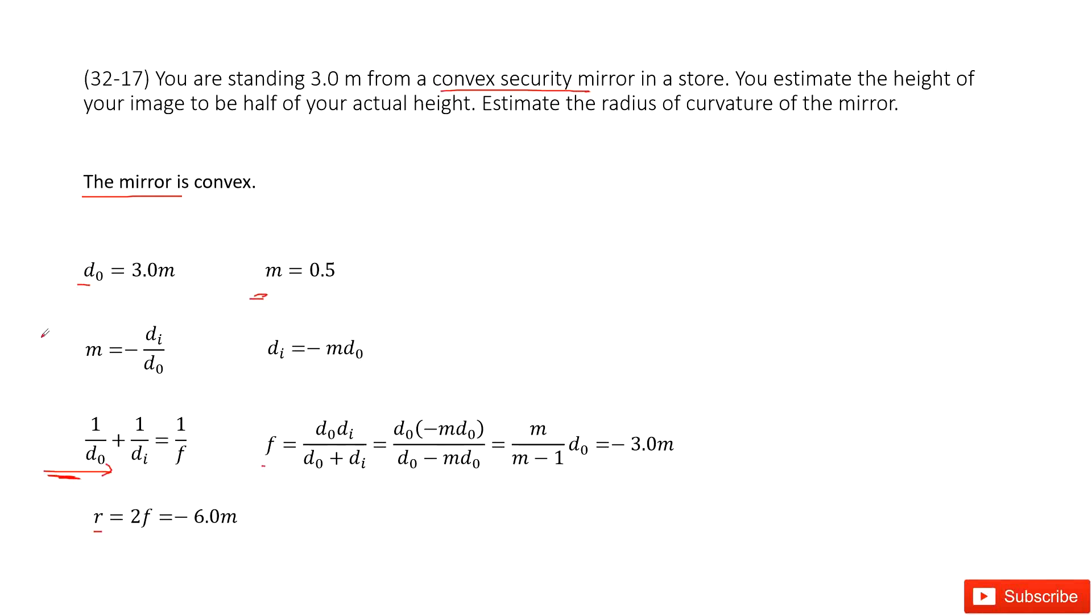We know m, the magnification. It can connect di and d0. We get the definition of magnification m and write down the function for di as negative m times d0. Input di inside this f function.